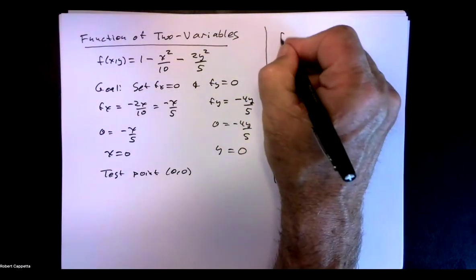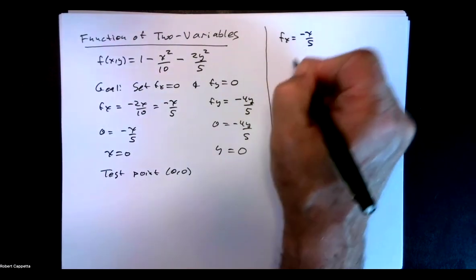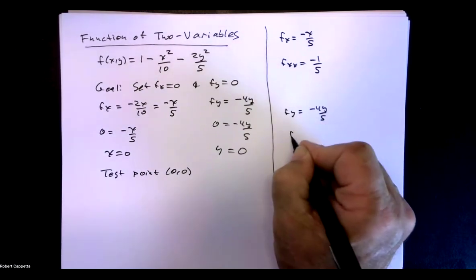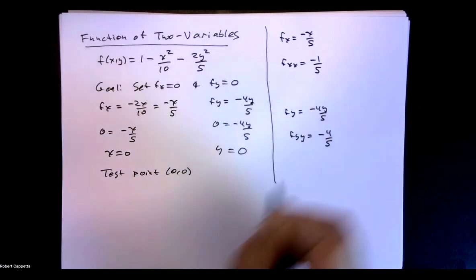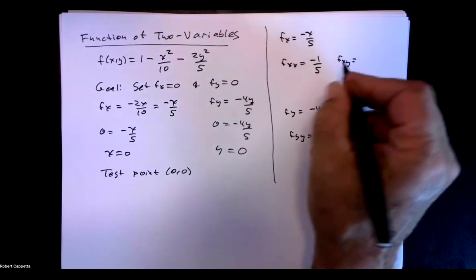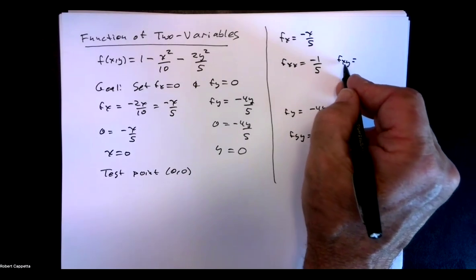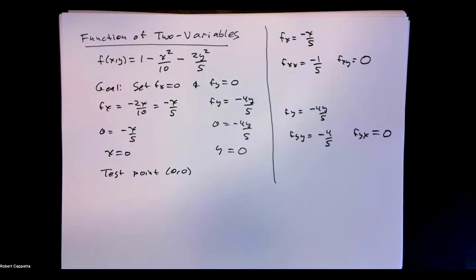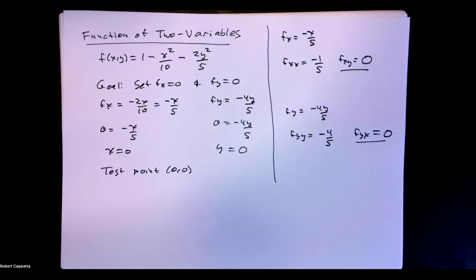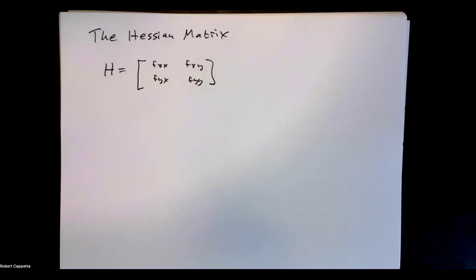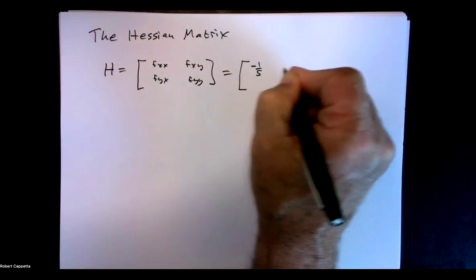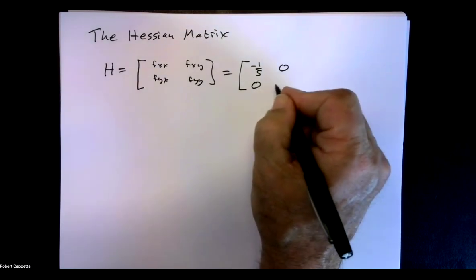We have f sub x is negative x over 5, so f sub x, x is negative 1 over 5. We have f sub y is negative 4y over 5, so f sub y, y is negative 4 fifths. But how about f sub x, y? Let's take the partial with respect to y of f sub x. There is no y there, so the partial with respect to y is 0. Similarly, f sub y, x — taking the partial with respect to x — is also 0. And recall that f sub x, y and f sub y, x will always be the same, which they are here. So I have these four second derivatives, and I'm going to use them to construct something called the Hessian matrix.